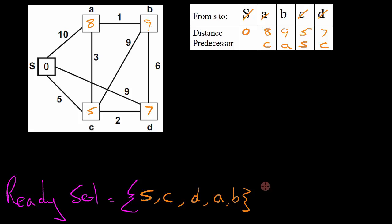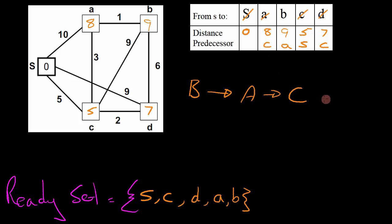In order to find the shortest path from S to any node, we simply start at the destination node and follow all the predecessors back to the start node. For example, if we want to find the shortest path to node A, we follow the predecessors for node A back until we get to S. A's predecessor is C and C's predecessor is S, so the shortest path from S to A is S → C → A. To find the shortest path to B, B's predecessor is A, A's predecessor is C, and C's predecessor is S. So the shortest path from S to B is S → C → A → B.